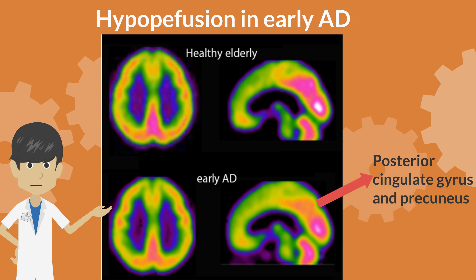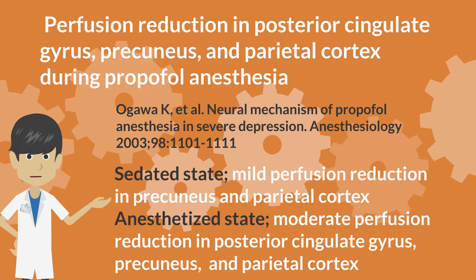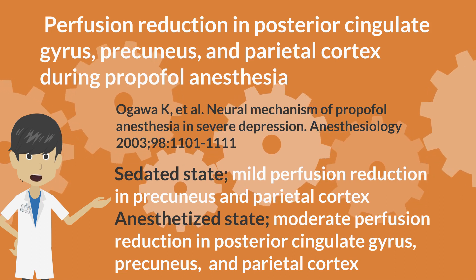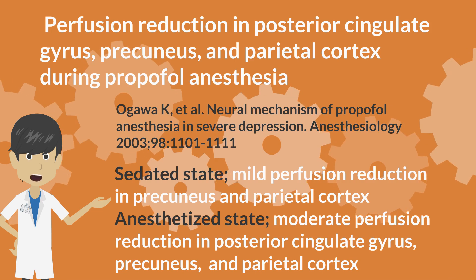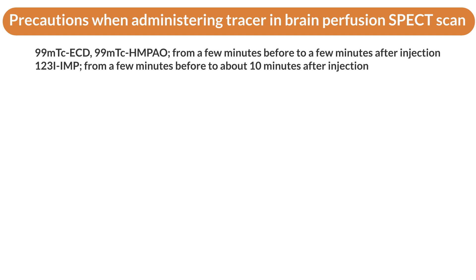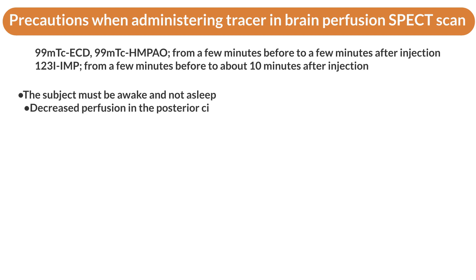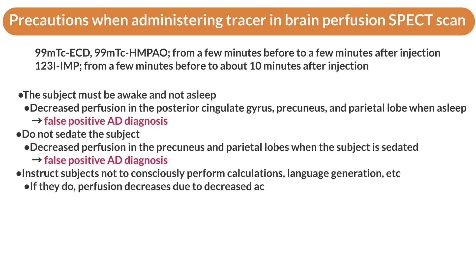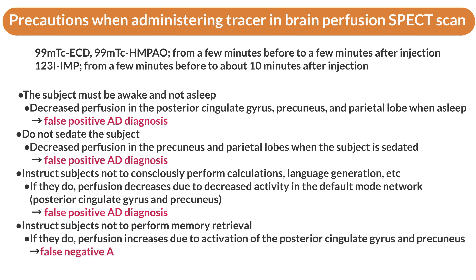Is there any other reason for perfusion reduction in the posterior cingulate and parietal area? Decreased perfusion in this area, as well as in the parietal lobe, can occur during anesthesia, sedation, and non-REM sleep. Therefore, caution should be exercised during brain perfusion SPECT scans until the brain distribution of tracers is fixed, to avoid false positives and negatives in Alzheimer's disease diagnosis. For 99mTc-ECD or 99mTc-HMPAO, conditions should be controlled from a few minutes before to a few minutes after tracer injection; for 123I-IMP, from a few minutes before to about 10 minutes after injection.